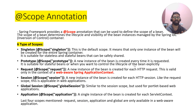The last four scope types — request, session, global session, and application — are only available for web-aware applications. Now we are going to see how we can implement these scopes in our Spring Boot application.